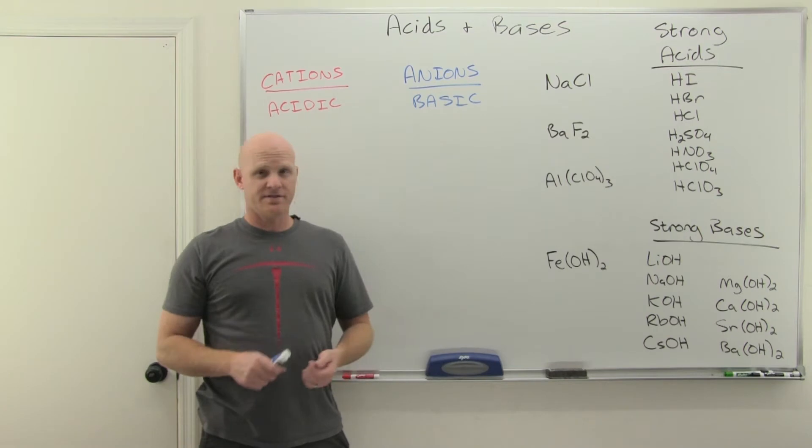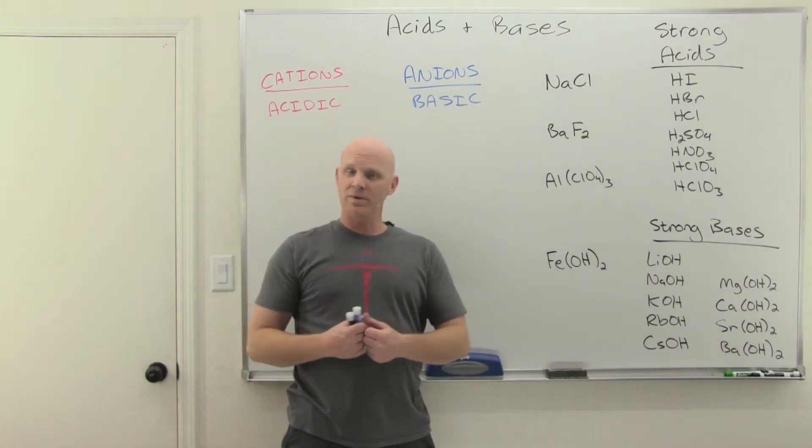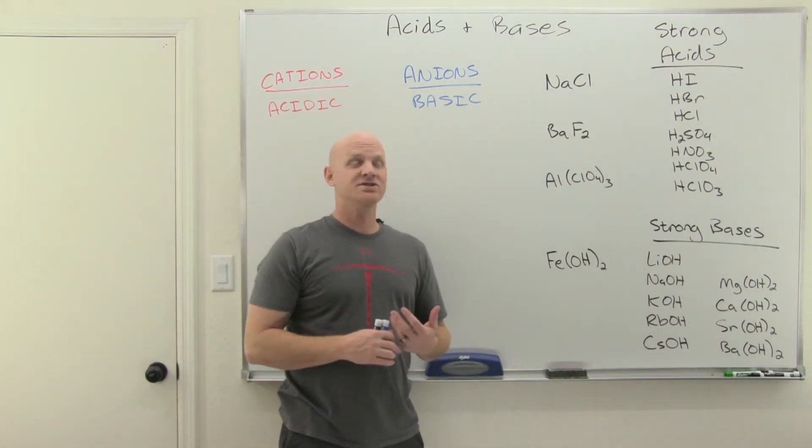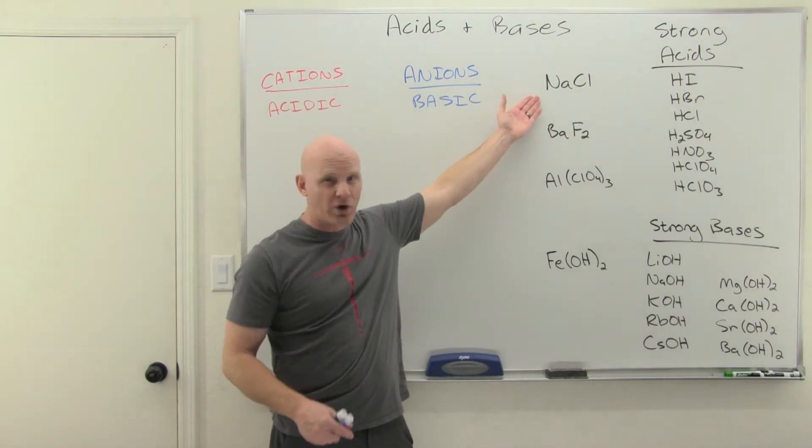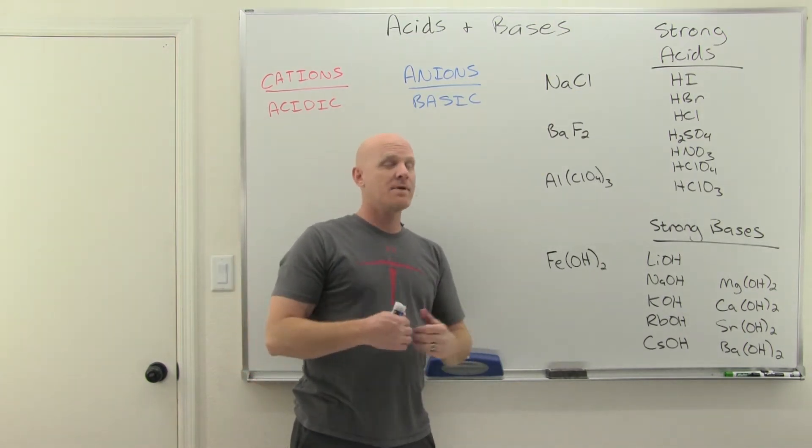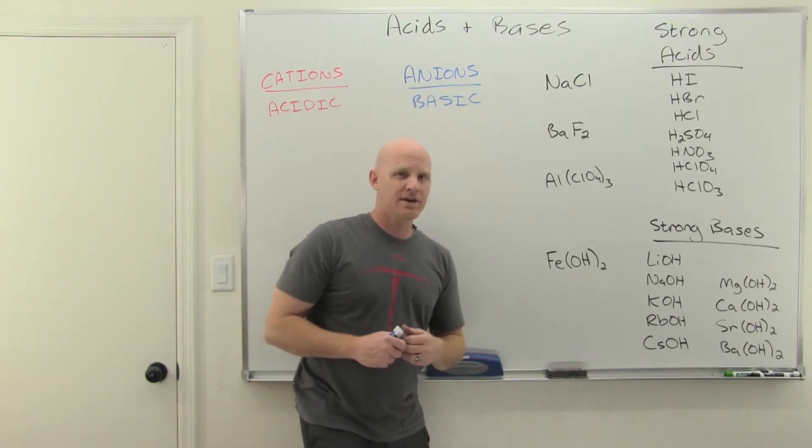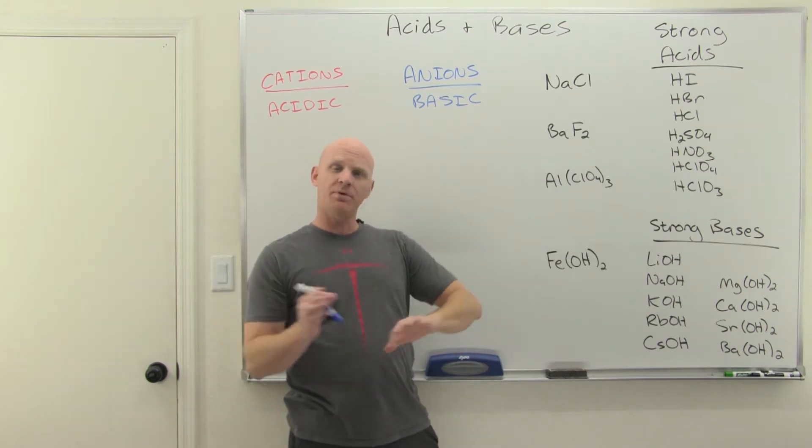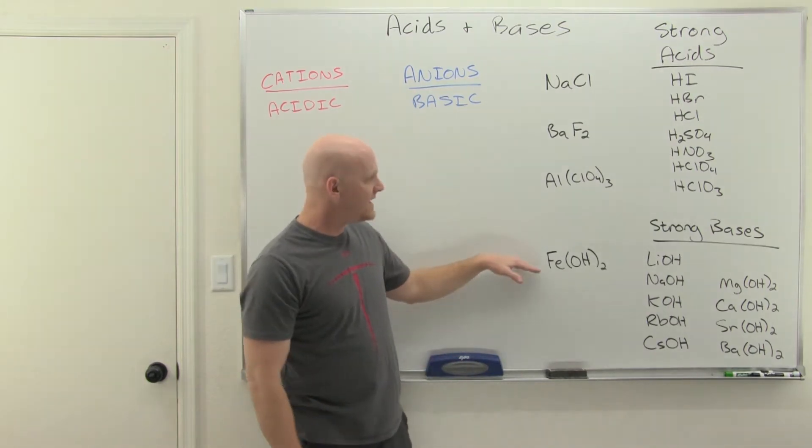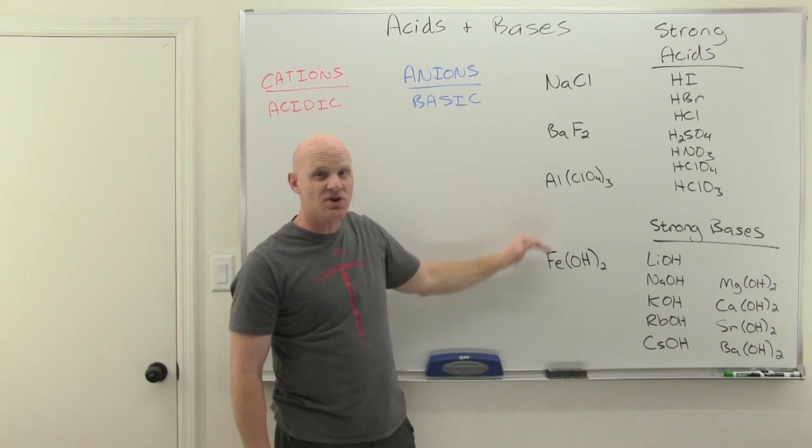Alright, so if we look at salts, any ionic compound can be called a salt. It's not just NaCl. NaCl is table salt, the only ionic compound, the only salt that you would likely encounter in a kitchen a couple hundred years ago. However, any ionic compound can be called a salt.